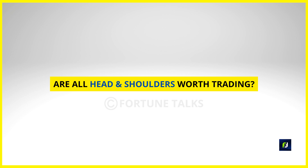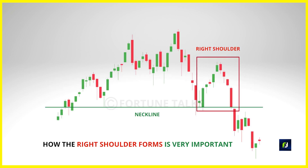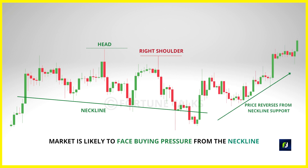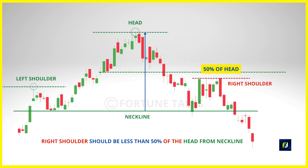Not all head and shoulders patterns are worth trading. There are a few things you must seriously look at before trading this pattern. First, how the right shoulder forms is a key criterion. If the right shoulder is very long, you want to avoid buying the breakout because the price has moved a very long distance from the highs of the right shoulder to the neckline, attracting more sellers on the way and creating strong buying pressure that can cause the pattern to fail. Make sure that the right shoulder is shallow and ideally stays below 50% of the head.